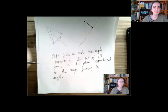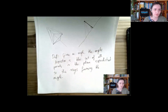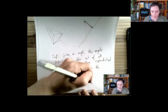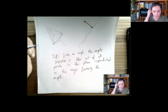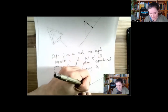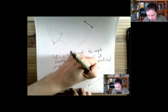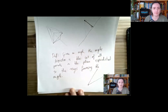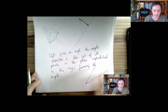So given an angle, the angle bisector is the set of all points in the plane that are equidistant to the two rays forming the angle. A ray is just a fancy word for half of a line — it has a beginning and no end. So these two rays form the angle.